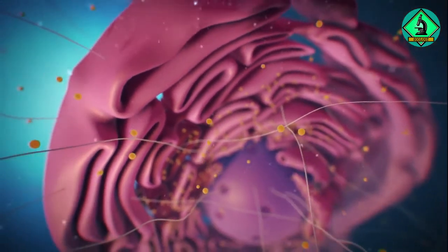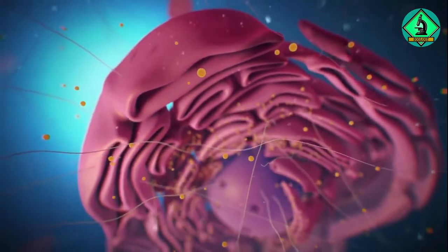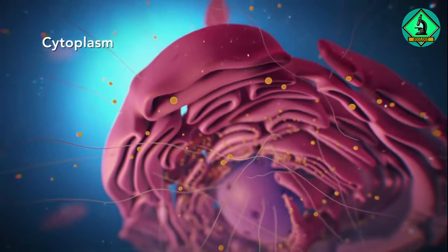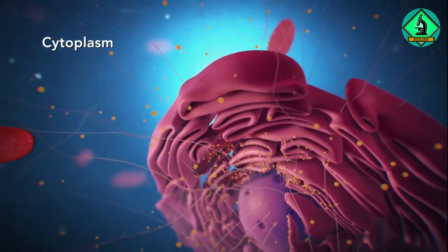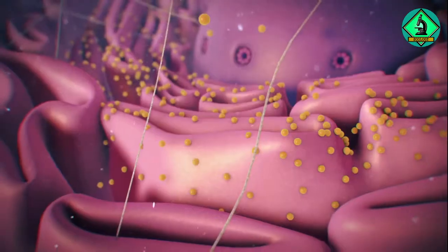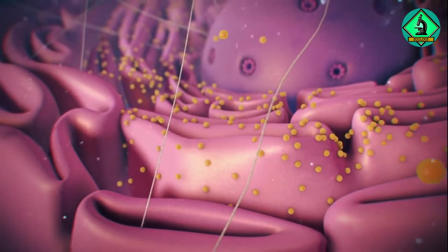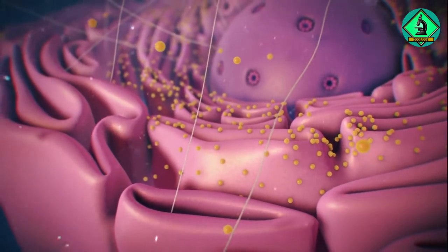Outside the nucleus, the ribosomes and the rest of the organelles float around in cytoplasm, which is the jelly-like substance. Ribosomes may wander freely within the cytoplasm or attach to the endoplasmic reticulum, sometimes abbreviated as ER.